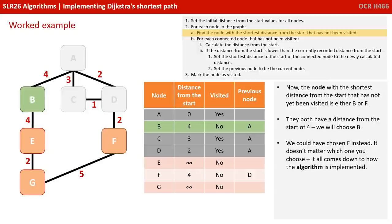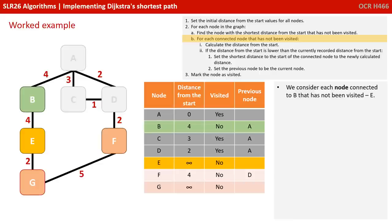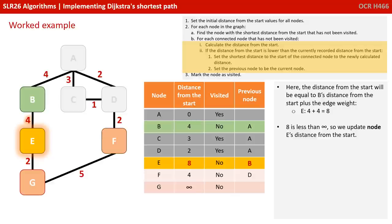We consider each node connected to B that has not been visited — that's just E. E's distance from start becomes 4 (B's distance) plus its edge value of 4, so 4 plus 4 is 8. 8 is less than the current value of infinity for E, so we update node E's distance from start to 8 and note the previous node as B. We're finished with node B, so we mark it as visited.